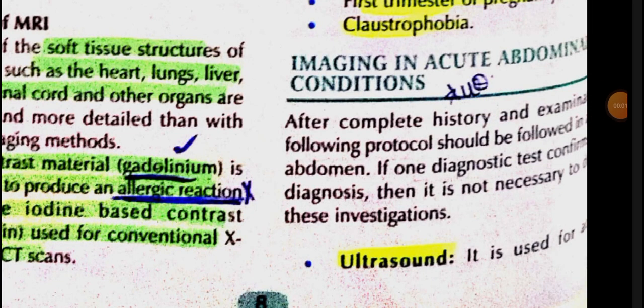This is the last part of the radiology topic — imaging in acute abdominal conditions. The patient presents with abdominal pain and constipation. We take a complete history and perform an examination, then proceed to diagnostic tests. For initial investigations, we will do ultrasound and X-ray.